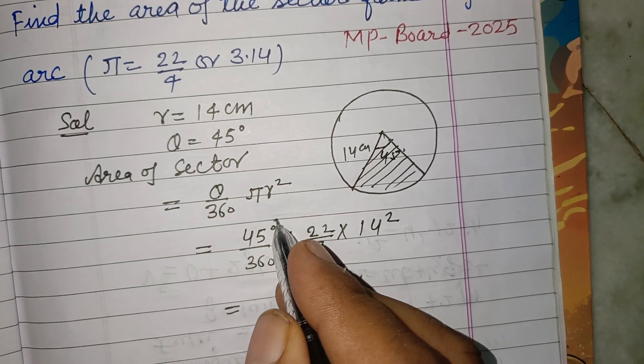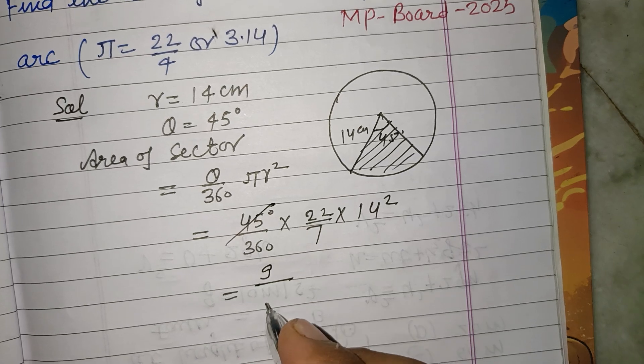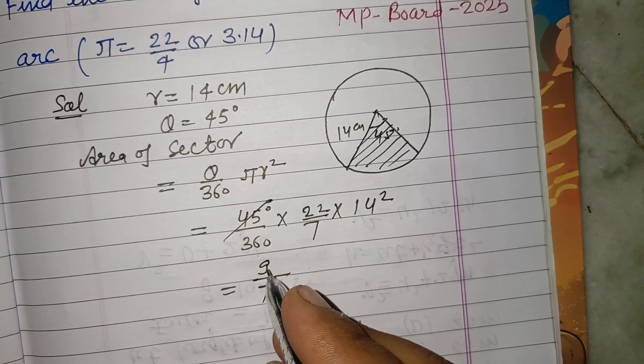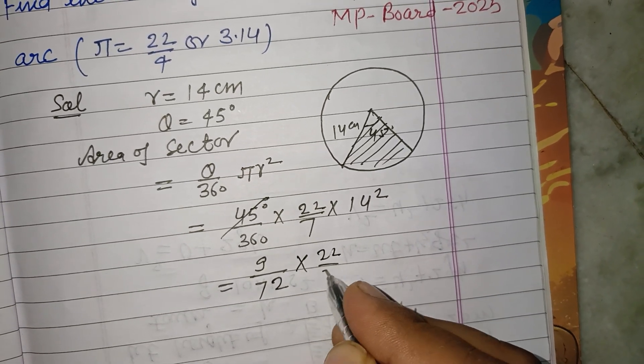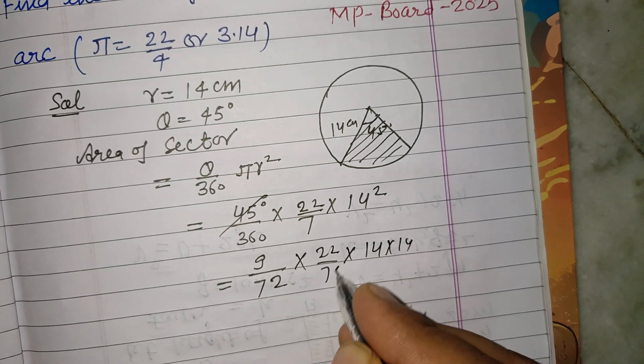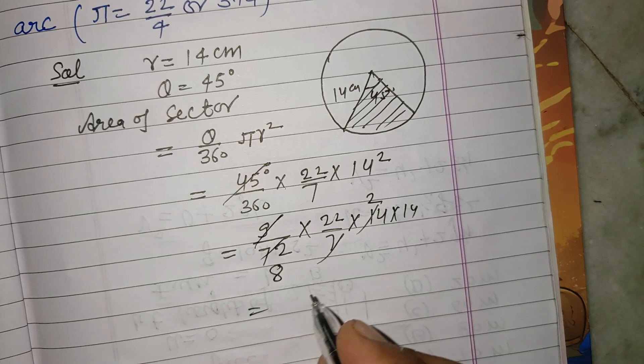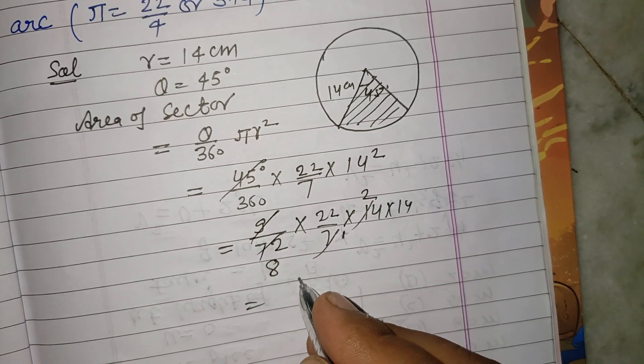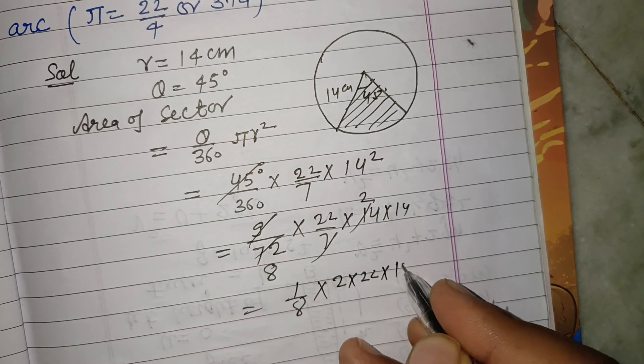5 into 9 is 45, 5 into 7 is 35, so 9 upon 72 into 22 over 7 into 14 into 14. 7 into 14 and here it is 8, so 1 upon 8, 2 into 22 into 14.